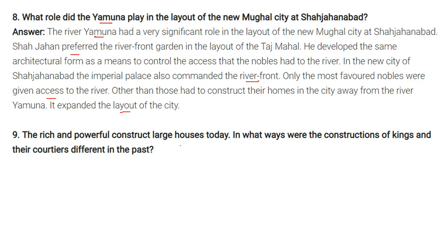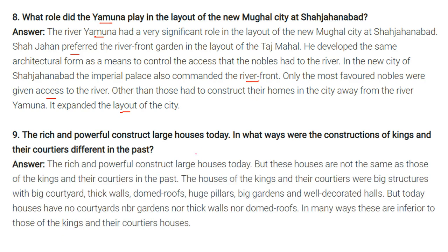Question: In what ways were the constructions of kings and their courtiers different in the past? The rich and powerful construct large houses today, but these are not the same as those of kings and their courtiers in the past. The houses of kings and their courtiers were big structures with large backyards, thick walls, dome roofs, huge pillars, big gardens, and well-decorated halls. Today, houses have no courtyards, no gardens, no thick walls, and no dome roofs — in many ways they are inferior to those of the kings and their courtiers.